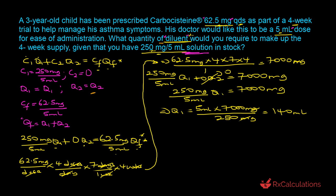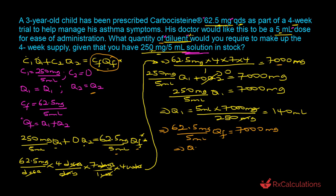We're actually looking for Q2, the quantity of diluent. To find that, we first need the final quantity Qf. Since Cf × Qf = 7,000 mg and Cf = 62.5 mg / 5 ml, we solve: Qf = (5 ml × 7,000 mg) / 62.5 mg = 560 milliliters.